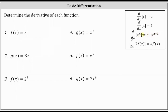Notice how we multiply by the existing exponent and then subtract one to get the new exponent. And then we have the derivative of a constant times f of x with respect to x is equal to the constant times the derivative of f of x.